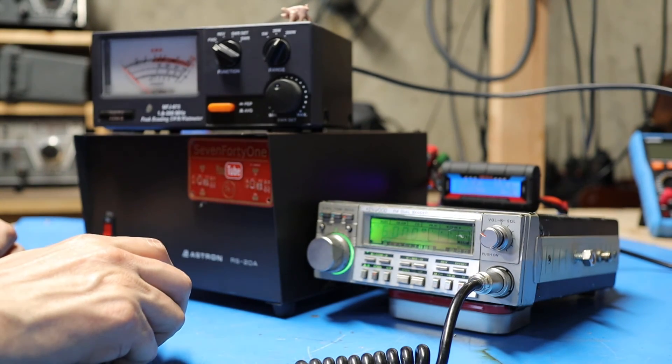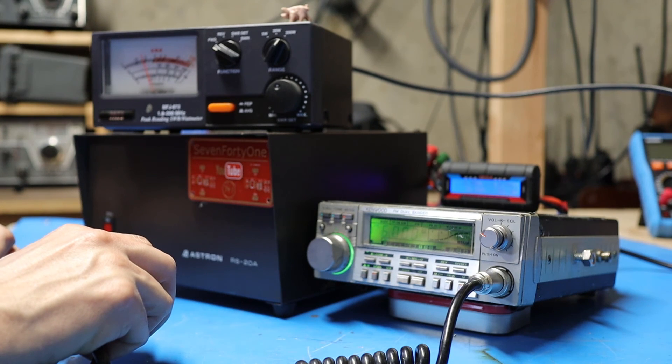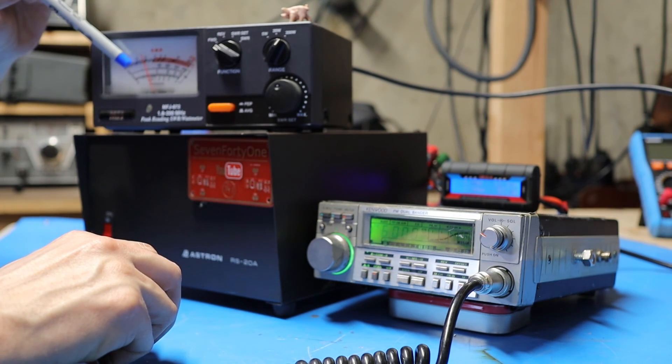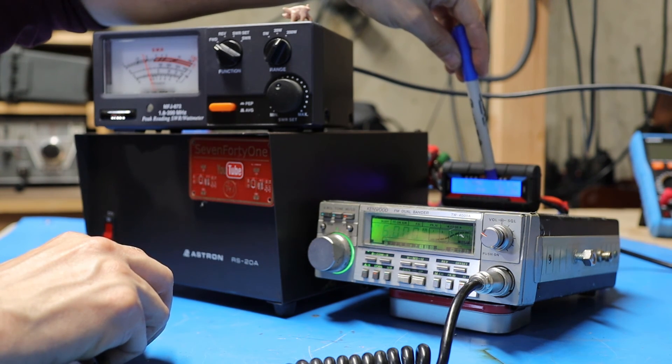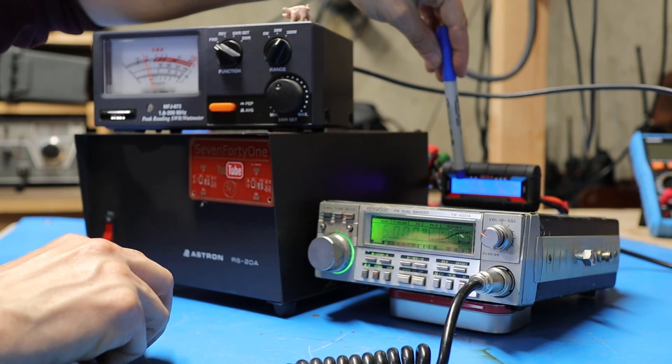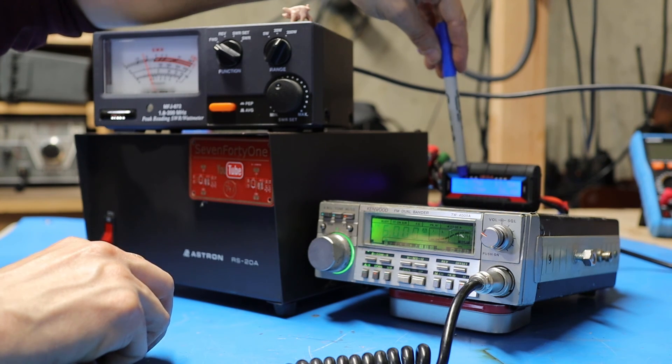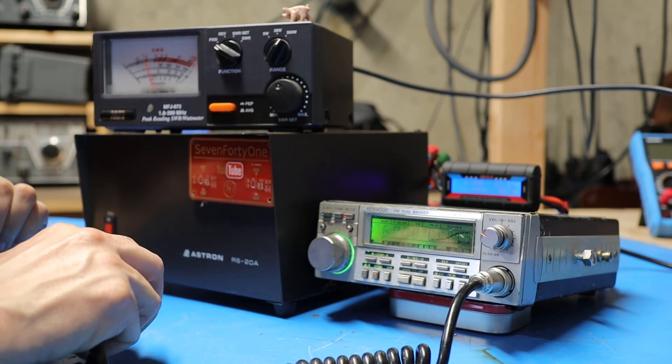If we kick this up to high power and key up, you can see the radio is putting out about 20 watts or so. On the meter we're drawing about 57 watts, and again if we wait for this to cycle through, we're now drawing about 4.75 amps.